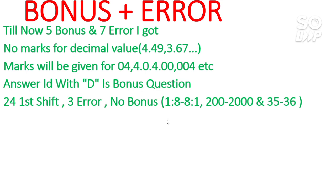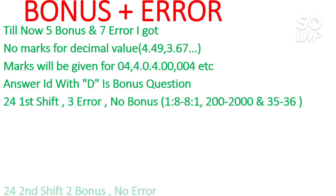For the 24th first shift errors: the first question had the right answer 8:1, but initially they provided 1:8 — now corrected to 8:1. The second question had the right answer 2000, but they initially provided 200 — now corrected to 2000. The third question had the right answer 36, but they initially provided 35 — now corrected to 36. That is all about the 24th first shift.